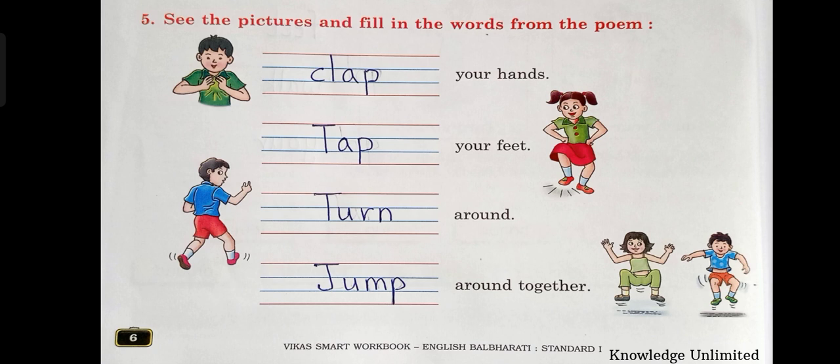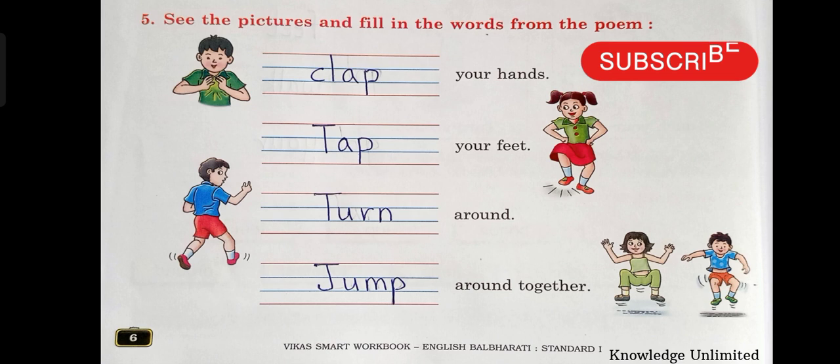See the third one. What is the boy doing? He is turning around, so we will write turn — T-U-R-N — turn around. And the last one — see the picture first. What are the kids doing? They are jumping, so what we are going to write here? Jump — J-U-M-P — jump around together. So you write it in your workbook.